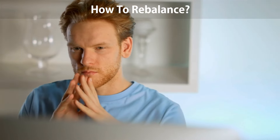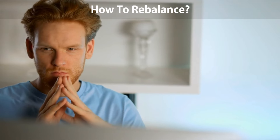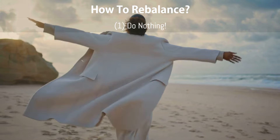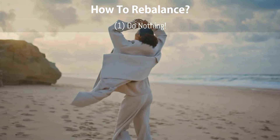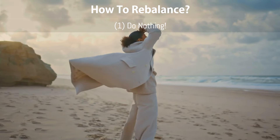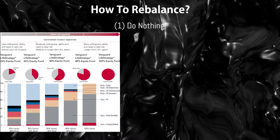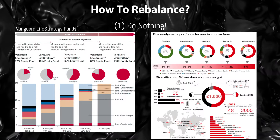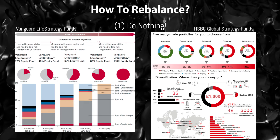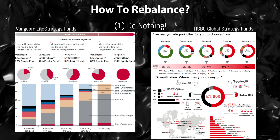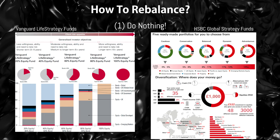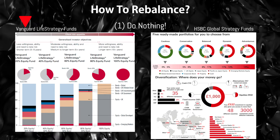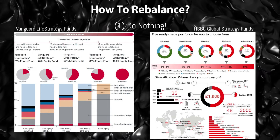Now, how do you actually rebalance? There are three options. First, do nothing — this only applies if you use balanced funds or fund of funds, like Vanguard LifeStrategy, Legal and General Multi-Index, or HSBC Global Strategy Funds. They rebalance automatically, some on a daily basis. Just watch out for home country bias in some funds, like the Vanguard LifeStrategy Funds, and keep an eye on fees.